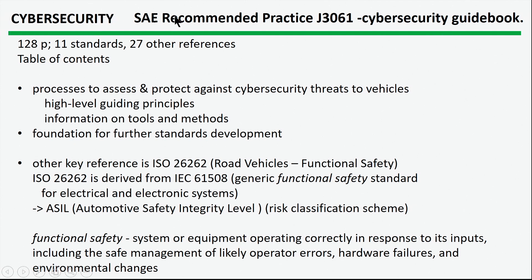The next topic is cybersecurity, covered in SAE J3061. This is literally a guidebook to cybersecurity. It's quite detailed, has a large number of pages, references many standards and other sources, and talks about a number of items. At a high level it covers the principles associated with cybersecurity and how to avoid cybersecurity problems. It refers to key references, in particular ISO 26262, which is the functional safety document very widely cited in the automotive literature. It talks about identifying the ASL — the risk level associated with a vehicle — and has lots of details about how cybersecurity evaluations are done. It's a fairly useful document.